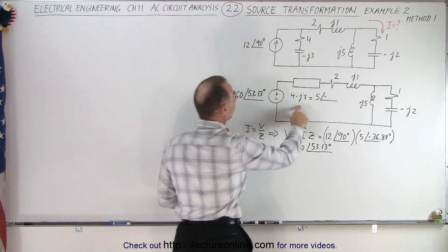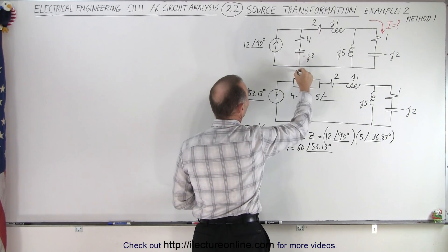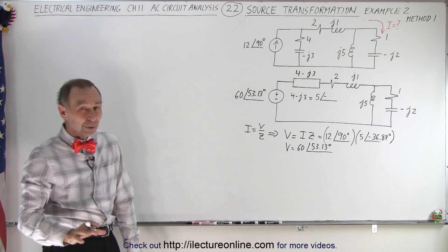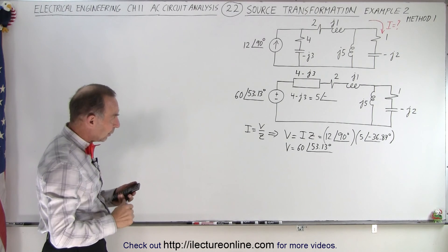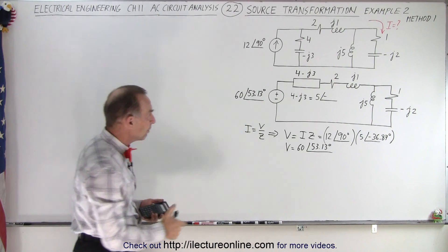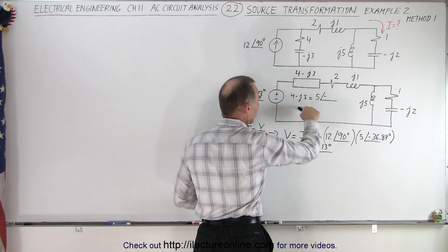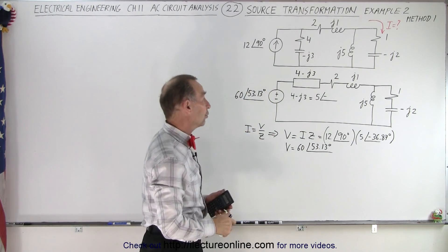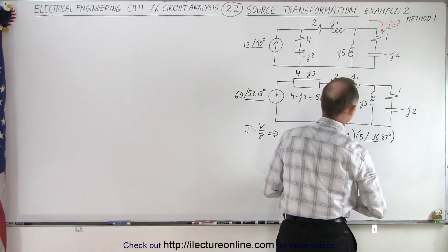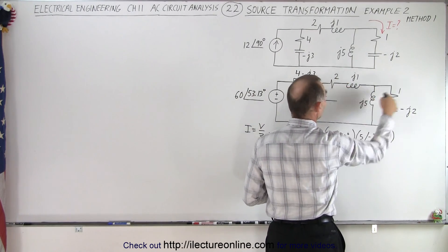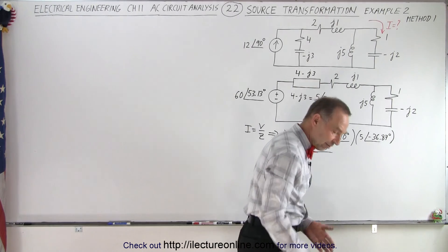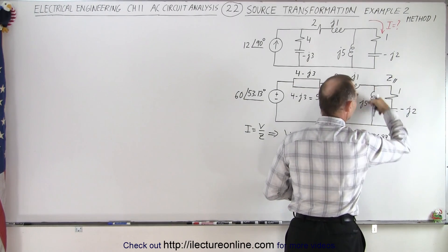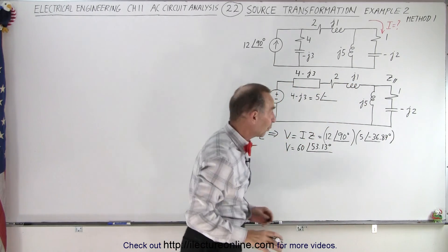And the impedance of course is going to be the same, so we end up with 4 minus J3. Now, where do we go next? We could combine these two and then do a source transformation again — we're going to use that for method 2. Instead, what I'm going to do is combine these branches here, and call that Z parallel for these two branches. So let's figure out what that's equal to.